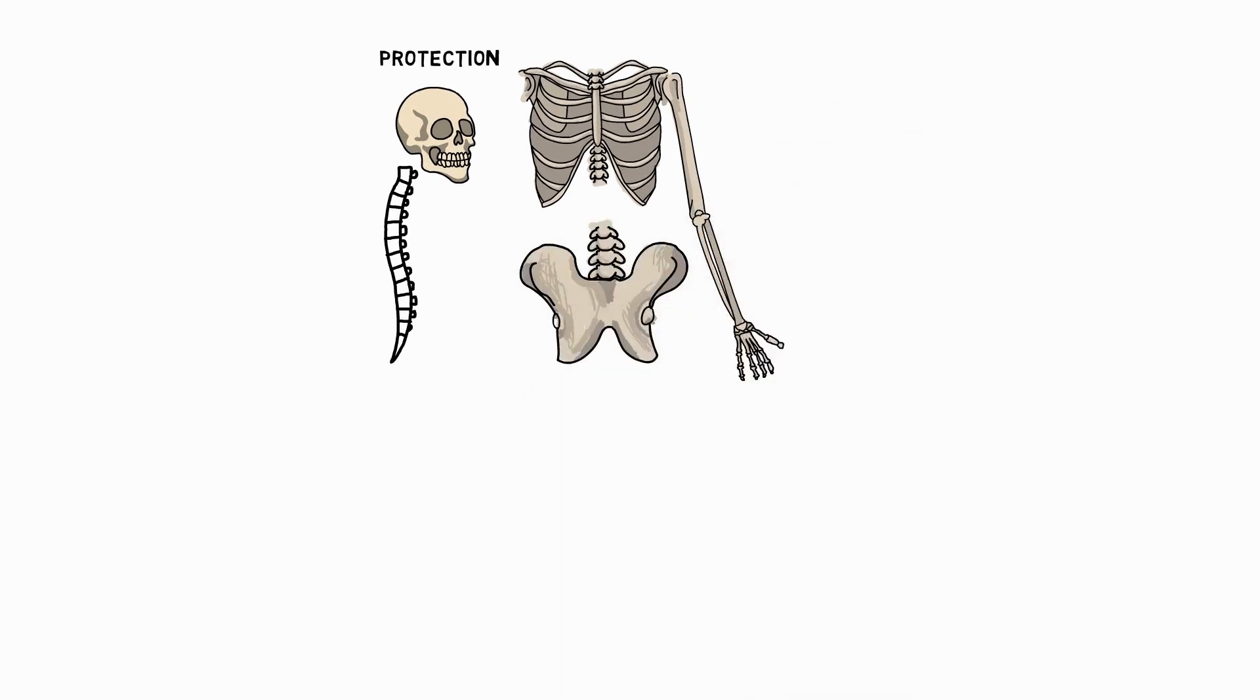Our pelvis supports the spine and protects the bladder and uterus in females. The hip bones and tailbone are also part of the pelvis, and their arrangement allows a baby to pass through during childbirth.